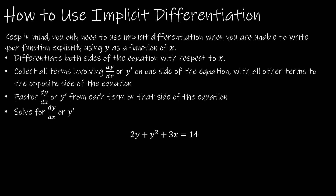Let's talk about how implicit differentiation works. You only need to use this if you are unable to write your function explicitly as y equals a function of x. Our first step is to differentiate both sides with respect to x. If I'm differentiating something that has a y, I'm essentially using the chain rule. So 2y — think about what would happen if it was 2x; the derivative would be 2. But the derivative of y is dy over dx, or y prime — I usually use y prime.